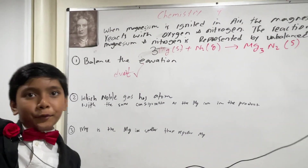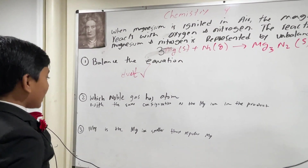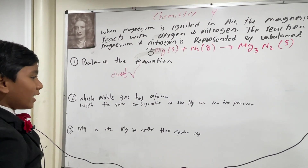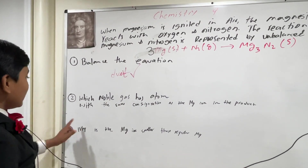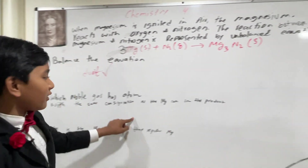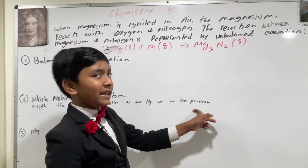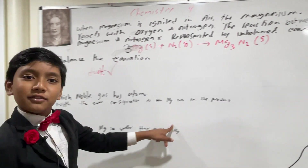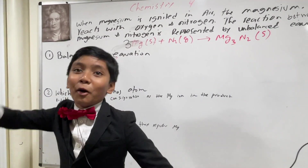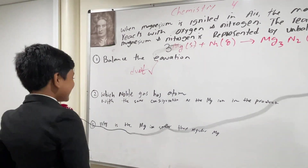Second problem: What Noble Gas has atoms with the same electron configuration as the Mg ion in the product? As you can see, there were 2 different handwritings here because I had to replace most of this, because the person who wrote this problem was a stupido boobido idiot.